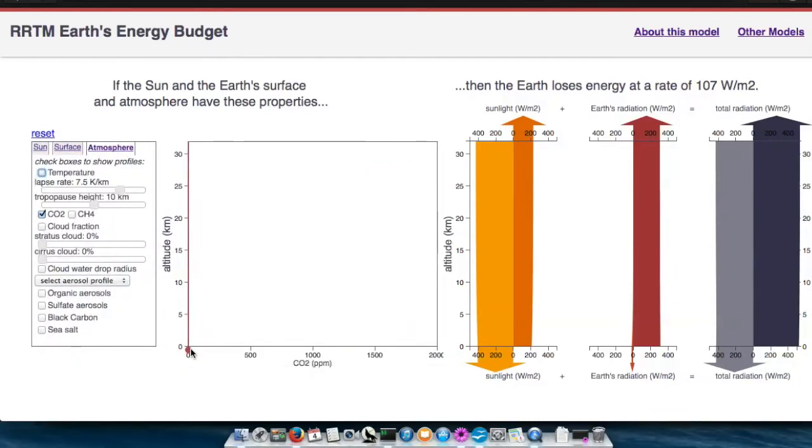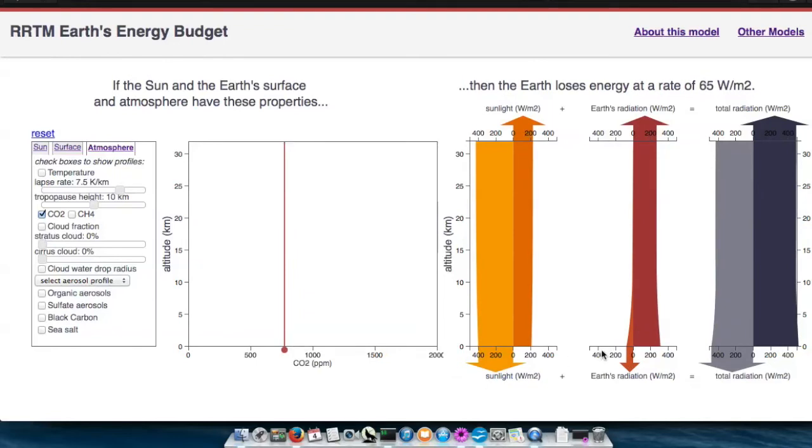You can change the profile of carbon dioxide, just like with the temperature, by dragging on the circle. And now you can see that we have a more radiatively active atmosphere in the longwave.